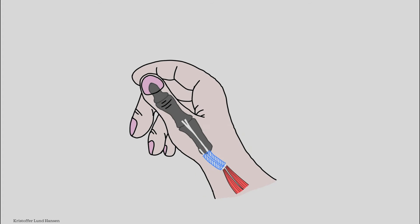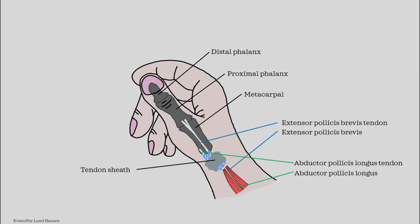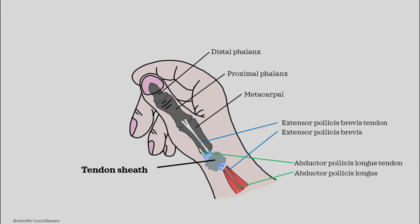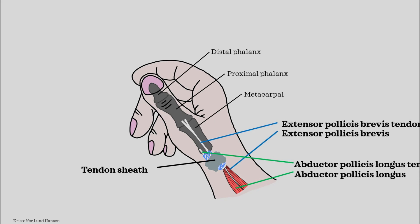If we look at what De Quervain's actually is, we need to know which structures inside the hand are involved. The important structures are the extensor pollicis brevis muscle and its tendon, the abductor pollicis longus muscle and its tendon, and the tendon sheath covering these tendons. Typically, prolonged overuse will irritate the tendons and their sheaths, causing swelling and thickening. This is the root of all the symptoms, and it can develop both acutely and over a longer time.